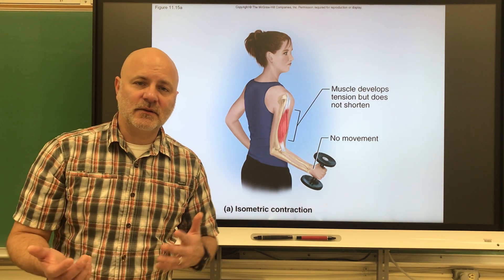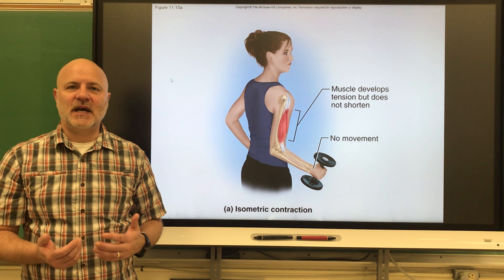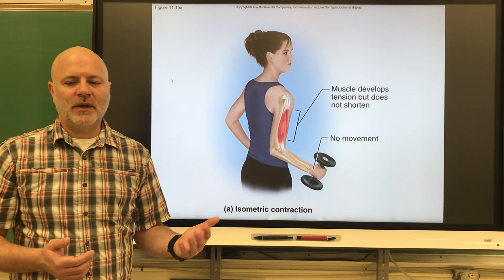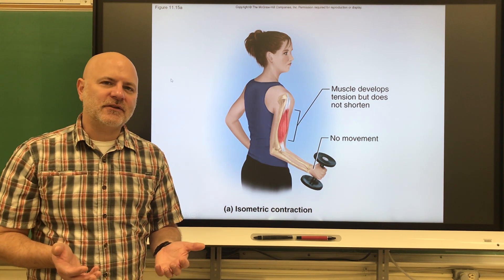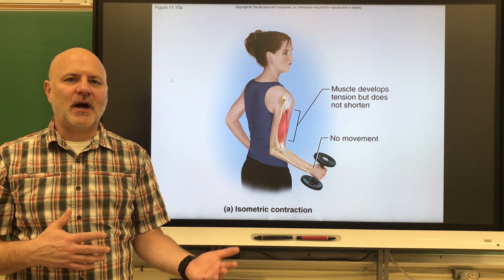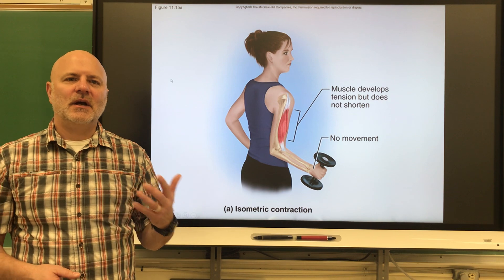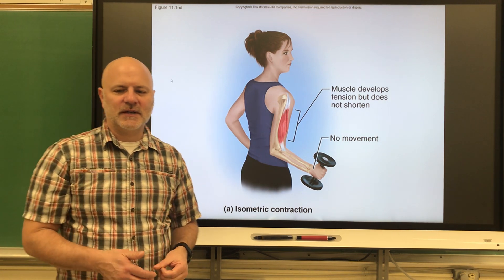Next is atrophy, the opposite. There's a decrease in muscle size due to inactivity. Here we're going to decrease the number of myofibrils. We typically see atrophy if somebody's been in a cast for a while, they haven't been contracting those muscles, so they will atrophy because of that.